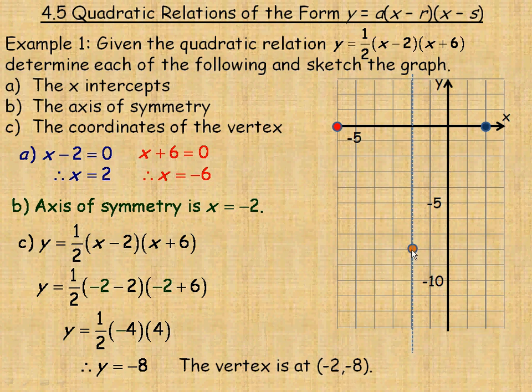Now we can draw the graph. It's an upward-opening parabola because the constant is positive. That's the vertex, and those are the two intercepts, so the graph looks like this.